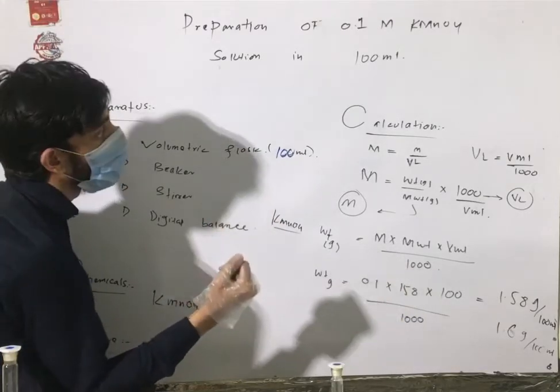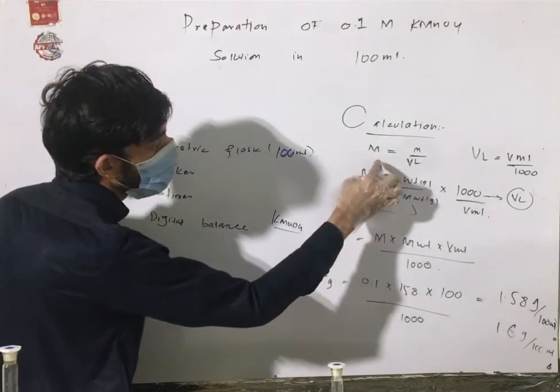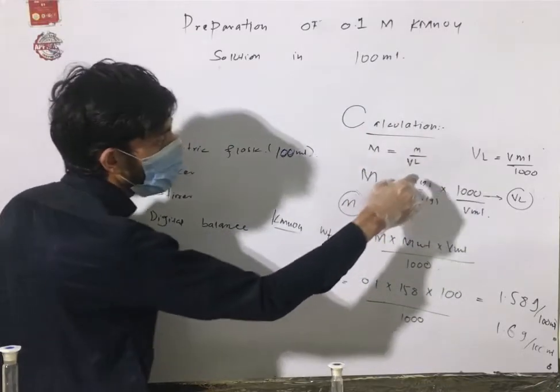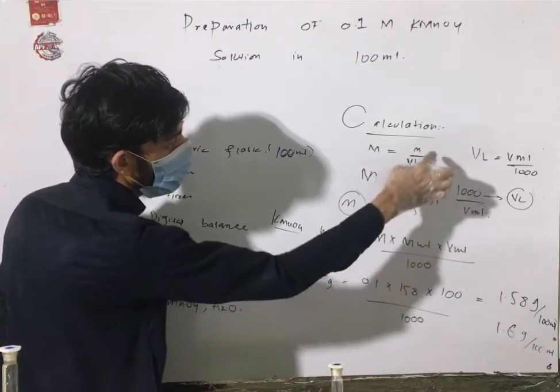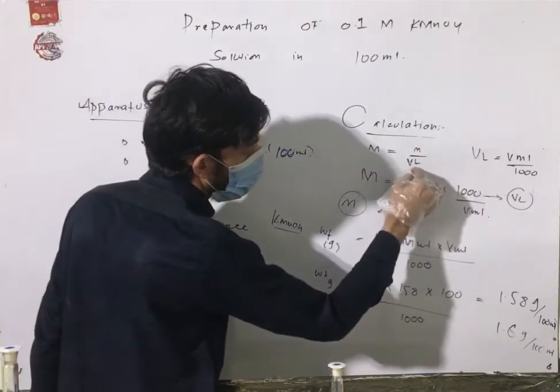We need to use the formula that the molarity is equal to number of moles divided by volume of solution in liters. That means how many moles can be available in your solution.